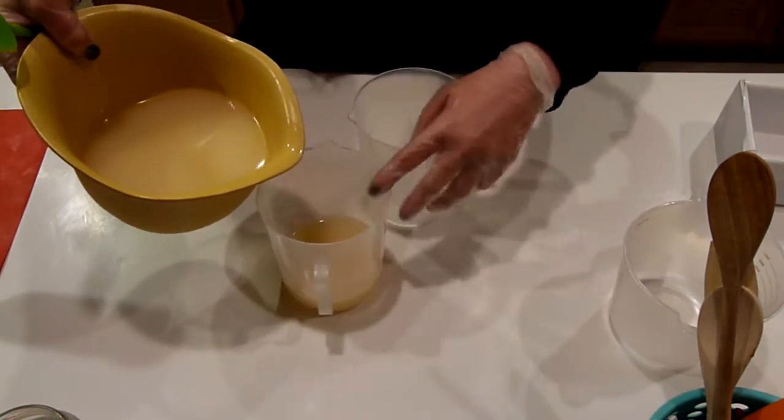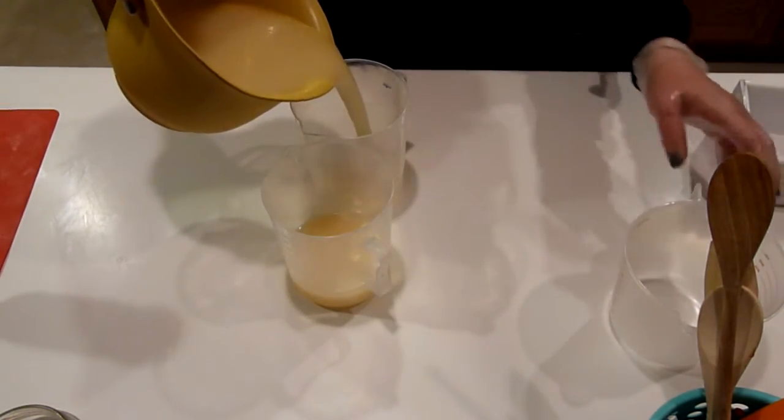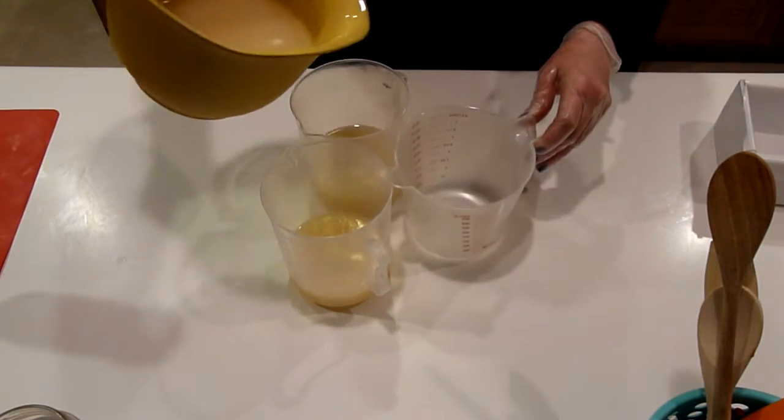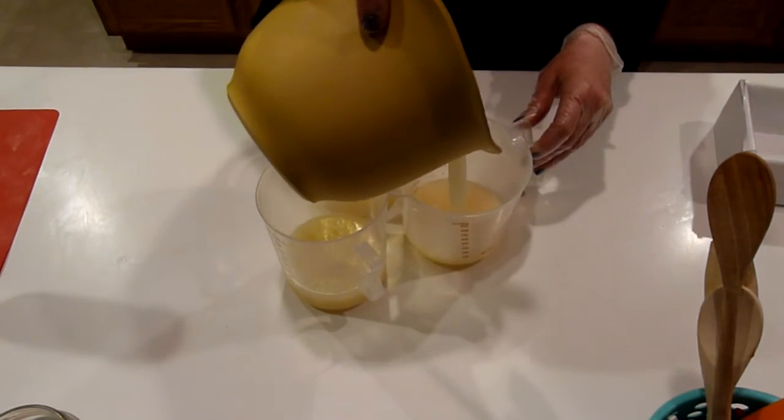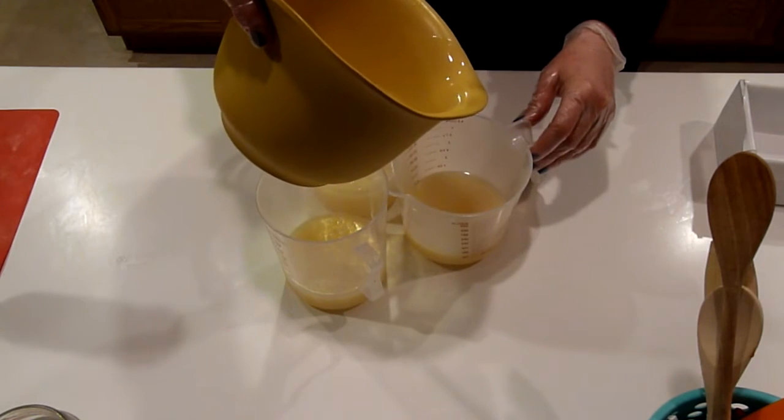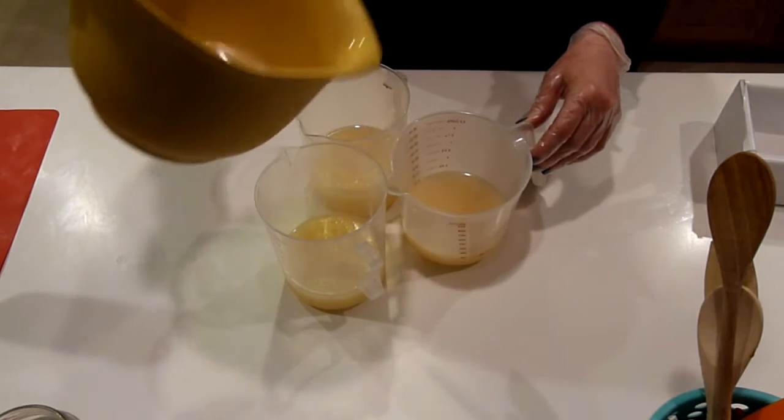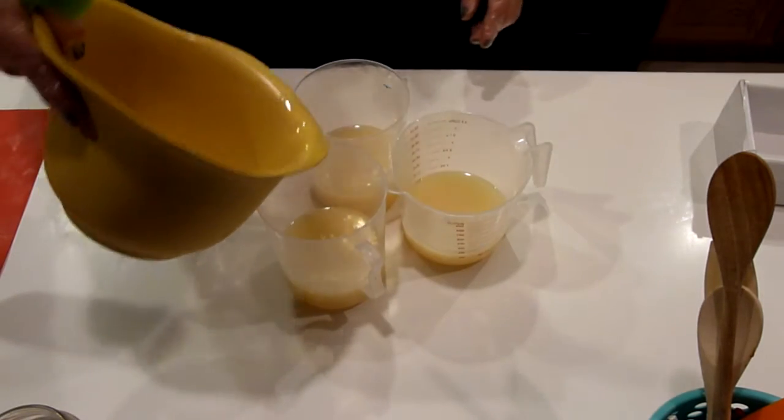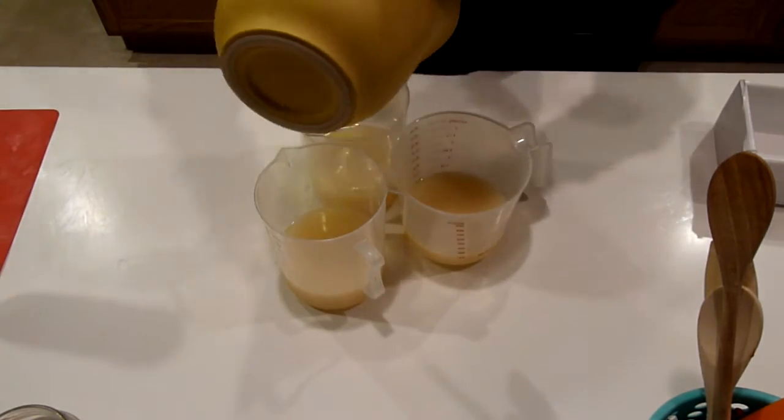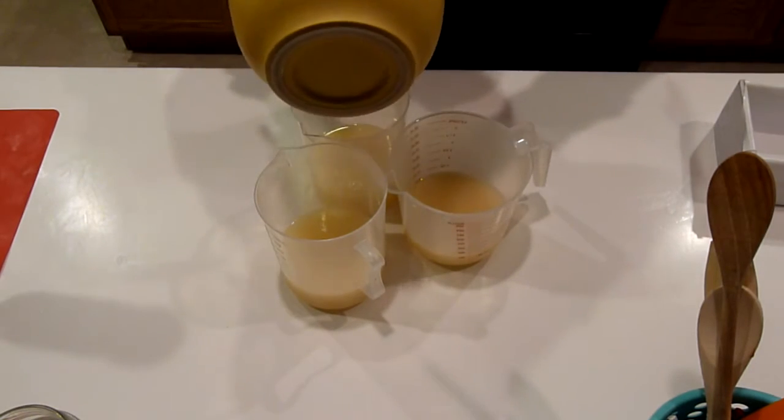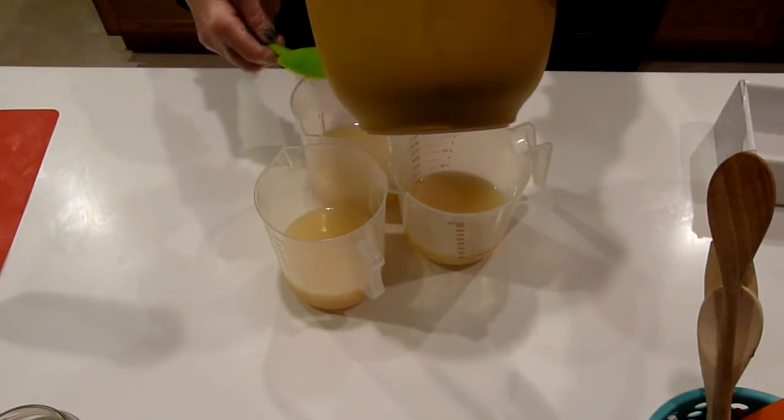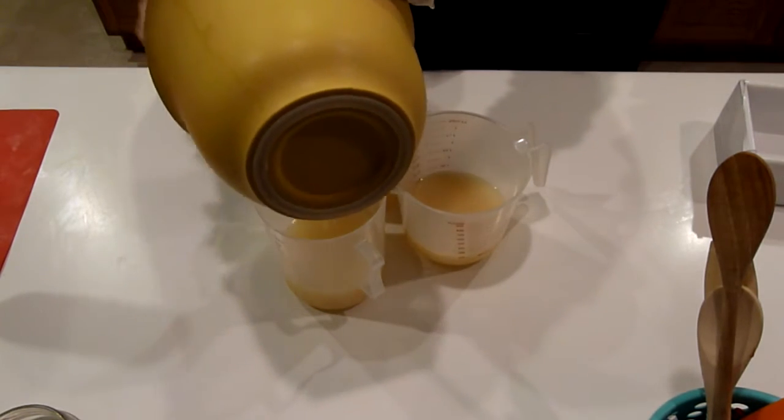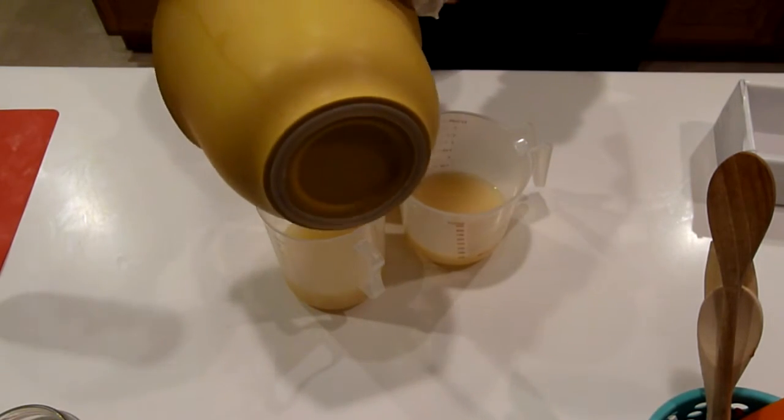The colors that I'm using are Lapis Blue from Crafter's Choice, and then I'm using Deep Rose, I think is what it's called, from Be Scented. And I mixed that with one that I got from eBay called Oriental Red to make kind of a deep red.